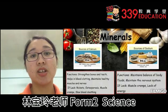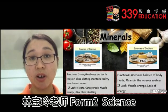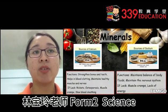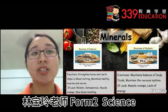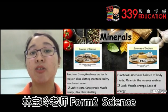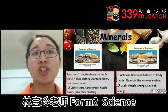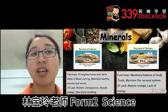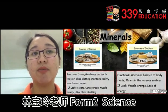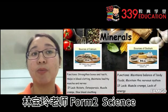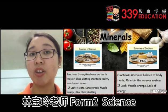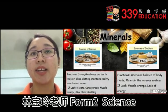Next are minerals. Like vitamins, there are a few types of minerals. The first one is calcium. Calcium can be found in milk, cheese, green vegetables, eggs and shrimp. The functions of calcium are to strengthen bones and teeth, help in blood clotting, and maintain healthy muscles and nerves. If lacking, one can suffer from rickets, osteoporosis, muscle cramps and slow blood clotting.